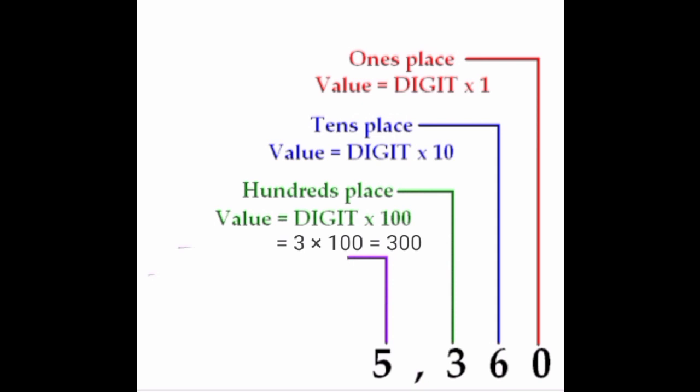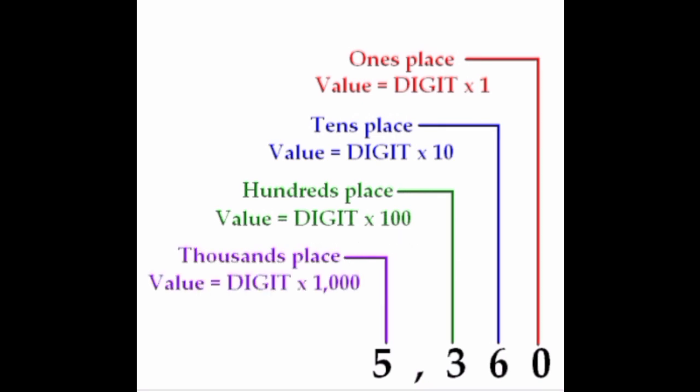Next, find the place value of 5. 5 is in which place, dears? Yes, very good — thousands place. So, the thousands place value is equal to 5 into 1000, which is equal to 5000. Therefore, the place value of 5 is 5000.